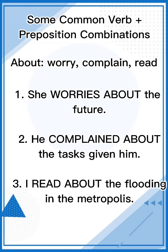There are some common verb and preposition combinations. For example, the preposition 'about' with the verbs worry, complain, read. She worries about the future. He complained about the tasks given him. I read about the flooding in the metropolis.